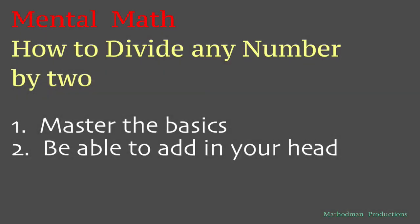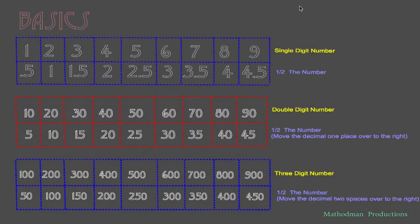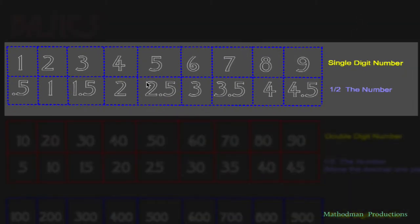Welcome to another MathedMan episode where today you will learn how to divide any number by two. First step is to master your basics. Here is a table of the half of each single digit number — half of one is 0.5, half of two is one, three is 1.5, and so forth.